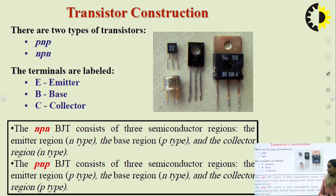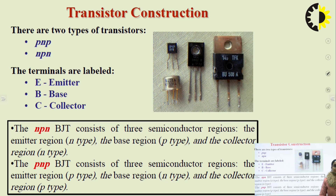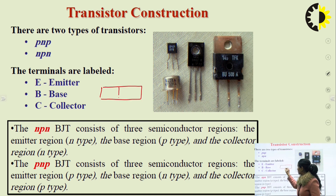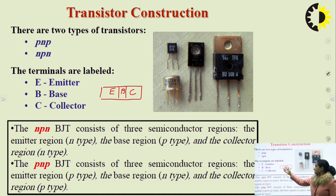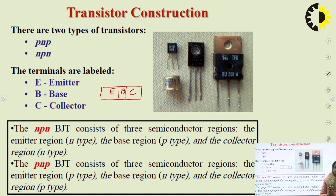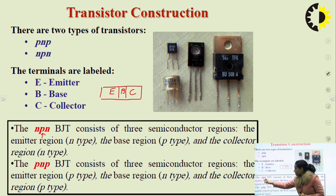BJTs are of two types: NPN and PNP, and the terminals are labeled as emitter, base, and collector. The NPN BJT consists of three semiconductor regions — the emitter region is N-type, the base region is P-type, and the collector region is N-type. The base region is sandwiched between the emitter and collector.